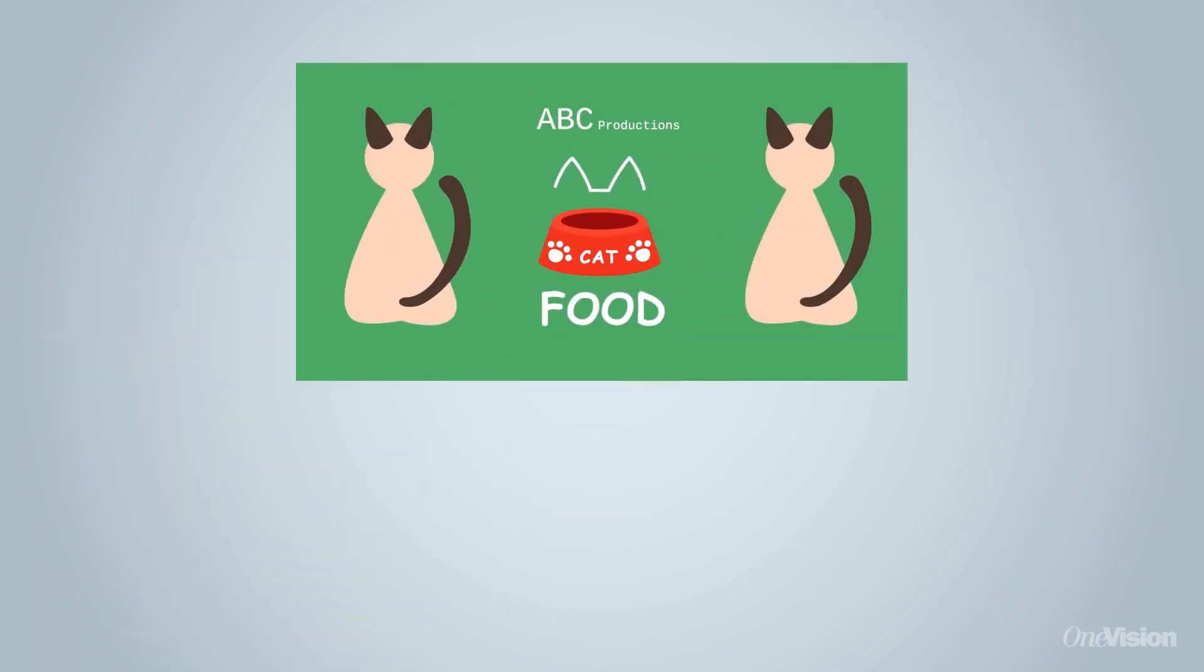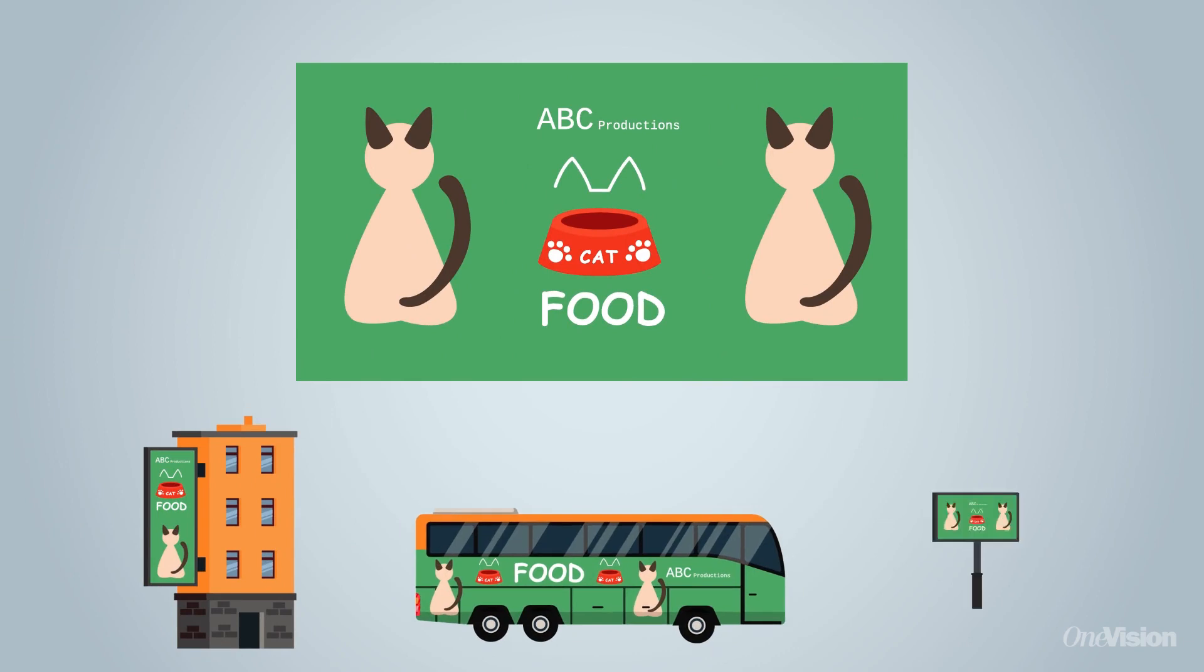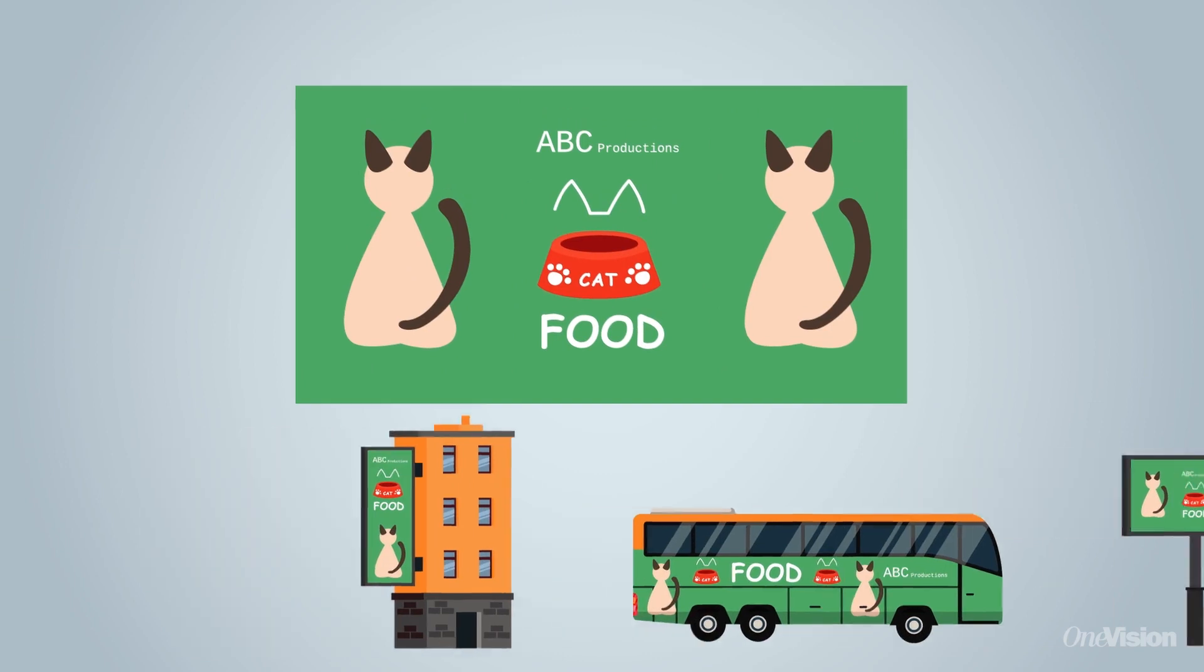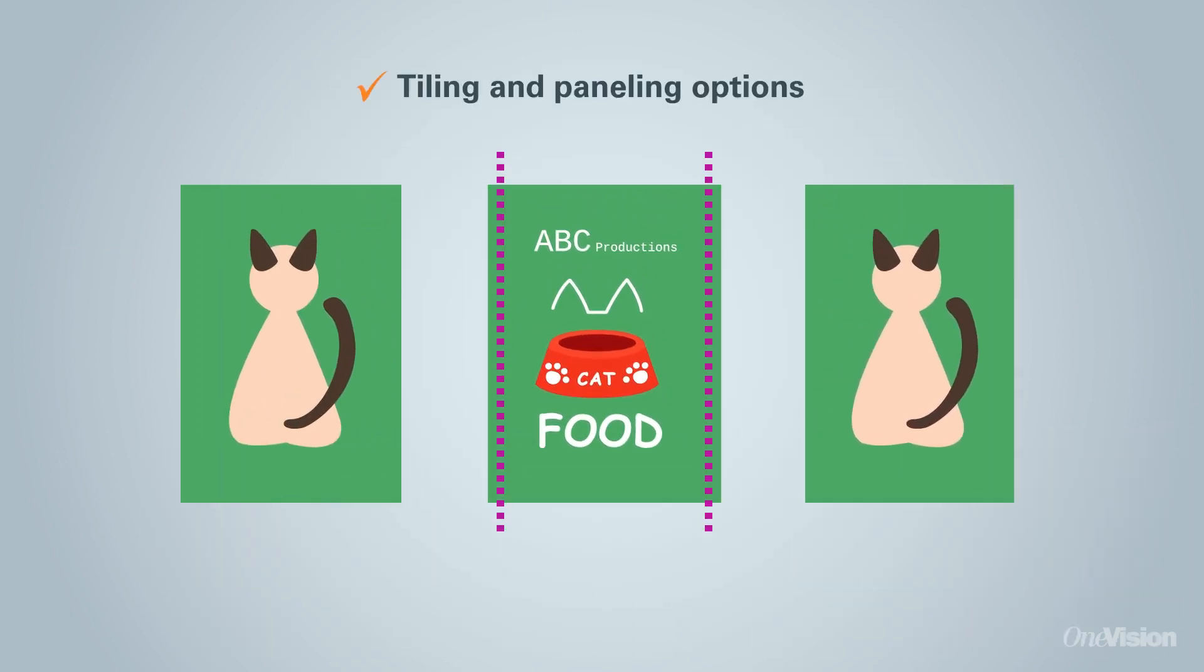When you print material for walls, buses, or displays, then you need to cut the artwork into printable parts because it is too large for your press. We can do that automatically with our tiling and paneling options.